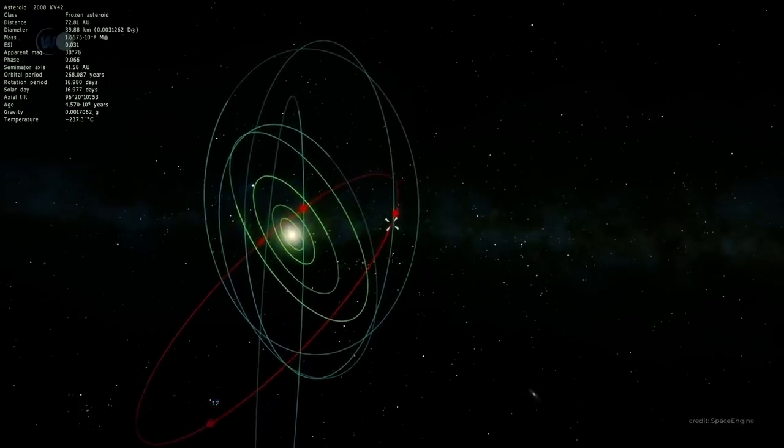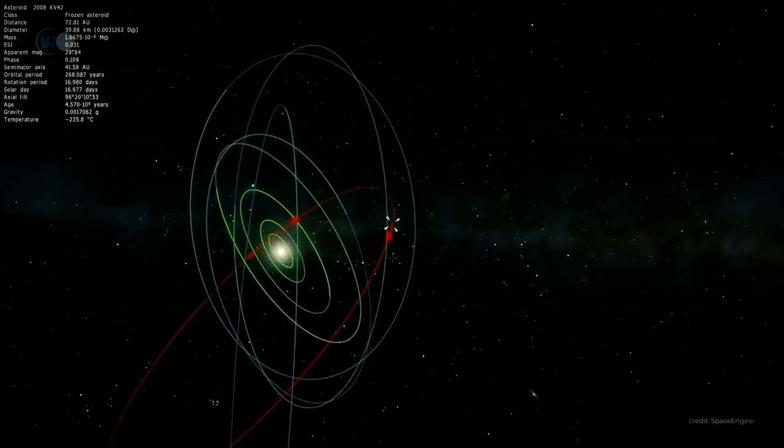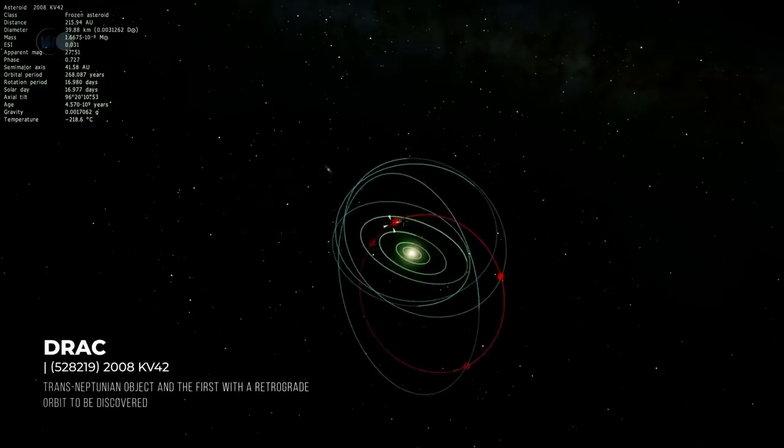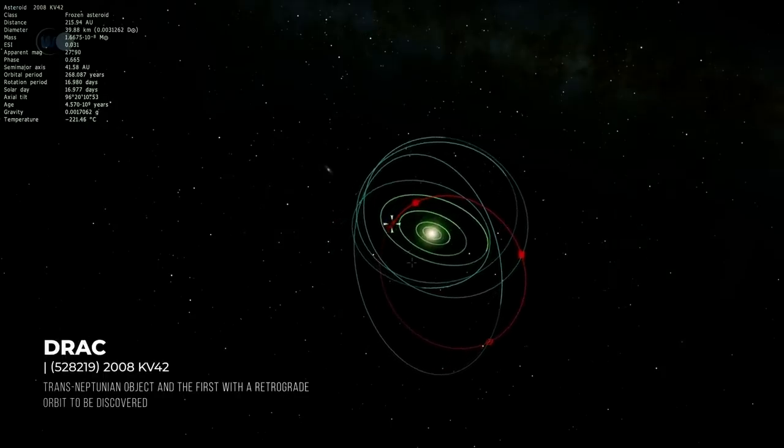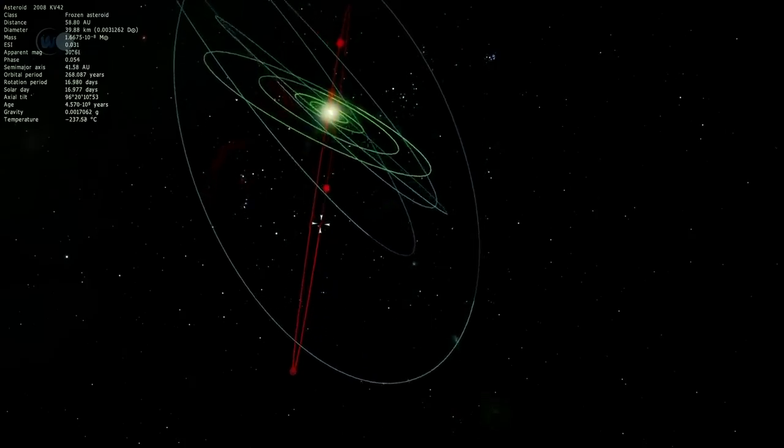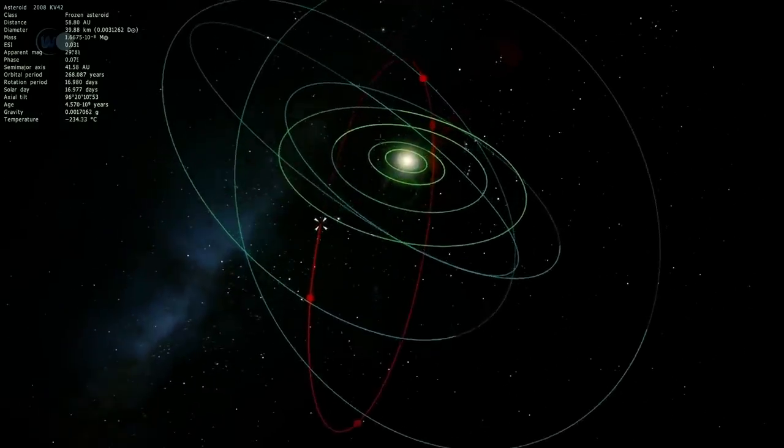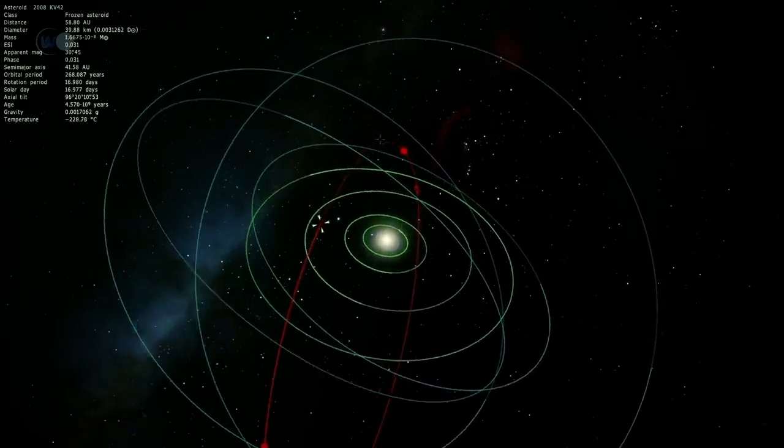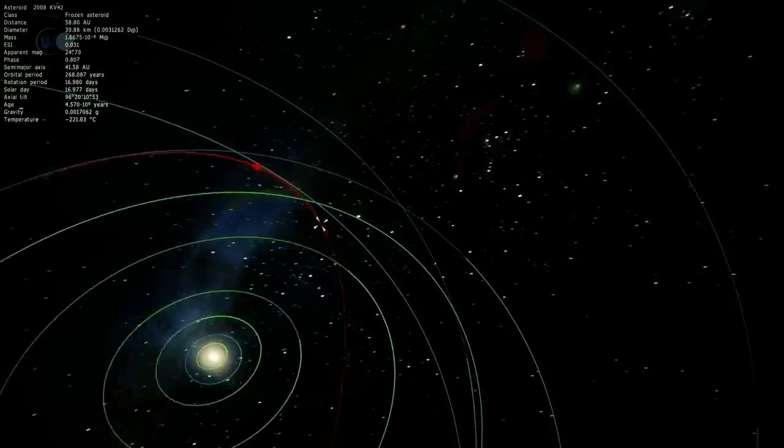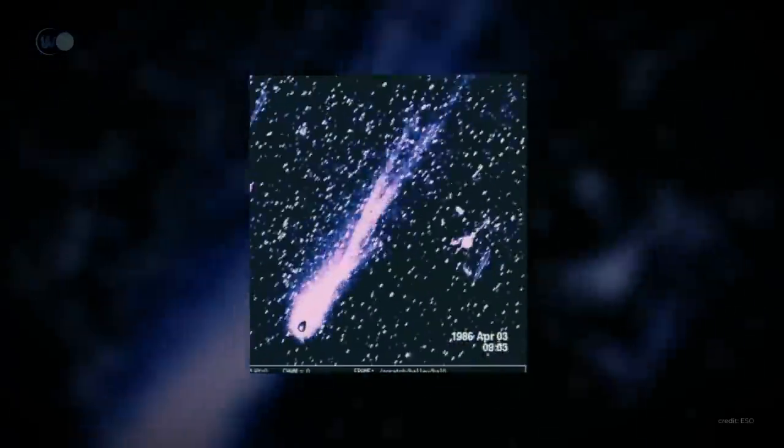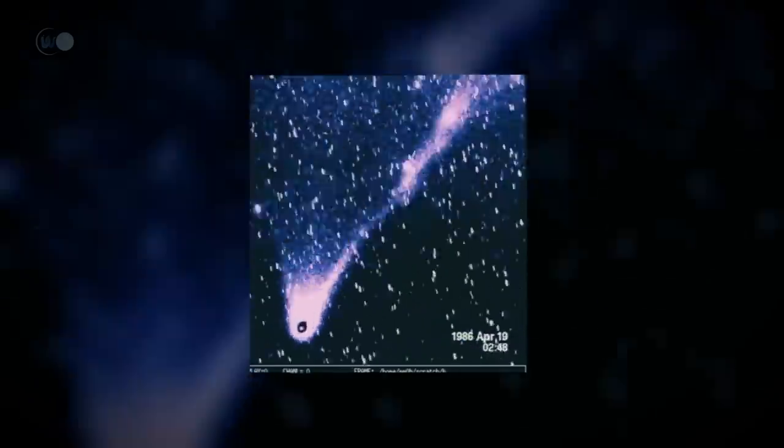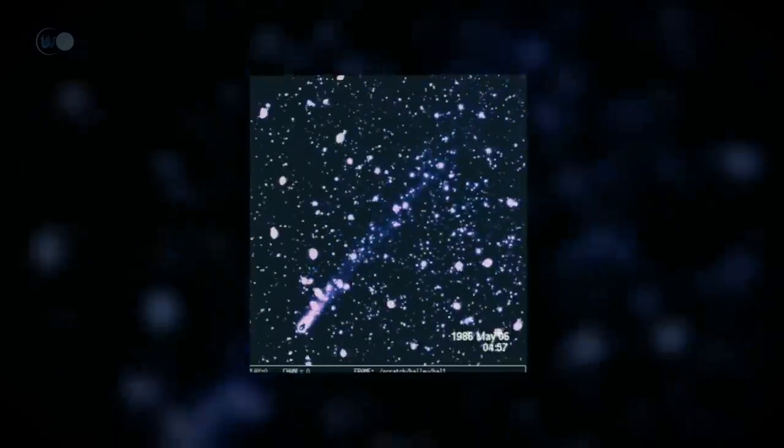However, one unusual object stands out from the rest. While many objects have highly inclined orbits, one has decided to orbit in the wrong direction. Nicknamed Drac, this object has an extremely inclined orbit of 103.5 degrees. It is one of the rare objects to have a retrograde orbit, which is generally found in certain comets, such as Halley's, which comes very close to the Sun.